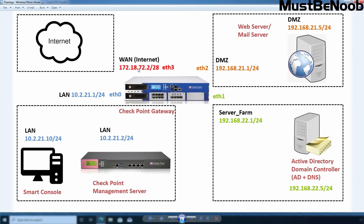During the installation, I assigned the IP address on the ETH0 interface, as that is the management interface in my case. In this lab guide, I will assign IP addresses to the remaining 3 network adapters. I will also set up a default gateway so the Security Gateway can access the internet. You can assign IP addresses during the first time configuration wizard if you want.